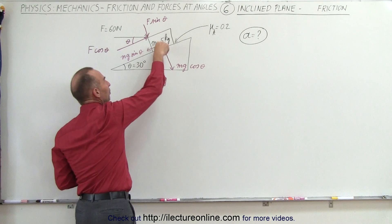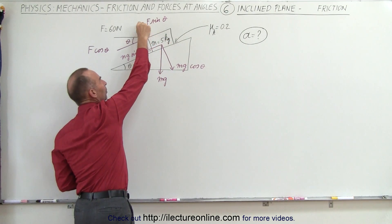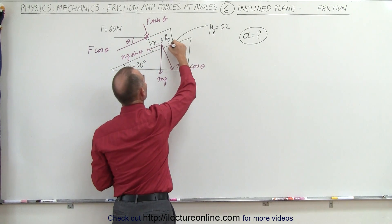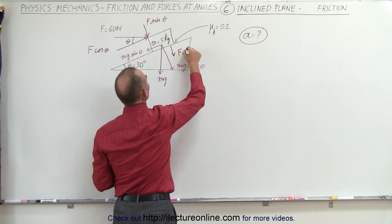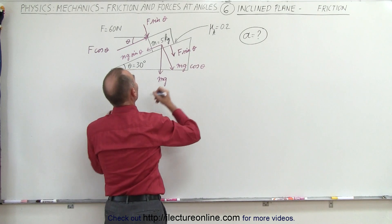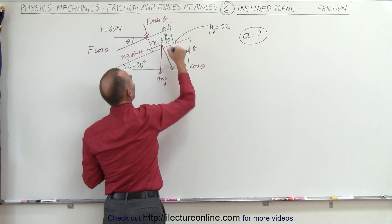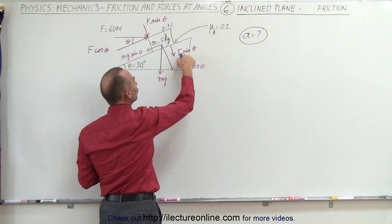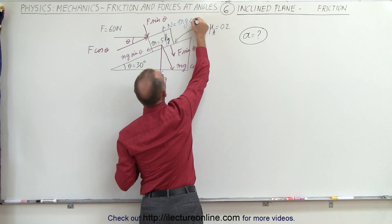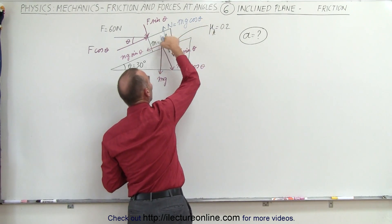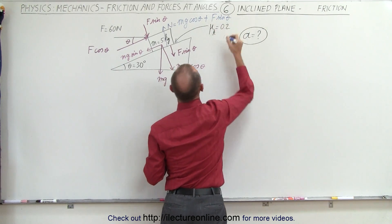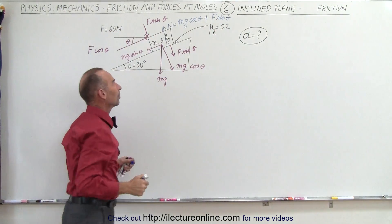Not only does the weight push down on the inclined plane, the force pushing on the block will also transfer to pushing down on the plane, which means we'll have an additional force of f times the sine of theta, which will then cause a normal force in this direction. The normal force is going to be the sum of these two perpendicular components: mg cosine theta — the perpendicular component of the weight of the block — plus f times the sine of theta, which is the perpendicular component of the force acting on the block.